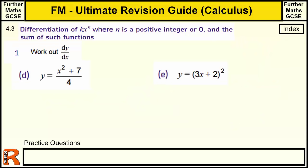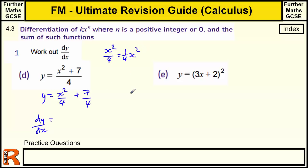D is one with a fraction. When you've got a fraction, we can separate it into individual terms: x squared over 4 plus 7 over 4. We can think of x squared over 4 as a quarter x squared. So when we differentiate x squared we get 2x, and 2 lots of a quarter gives us a half. The constant disappears, so this is going to be a half x.